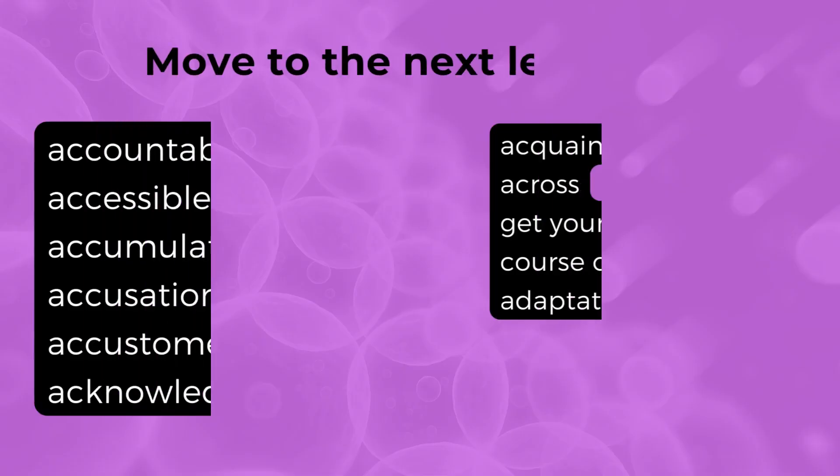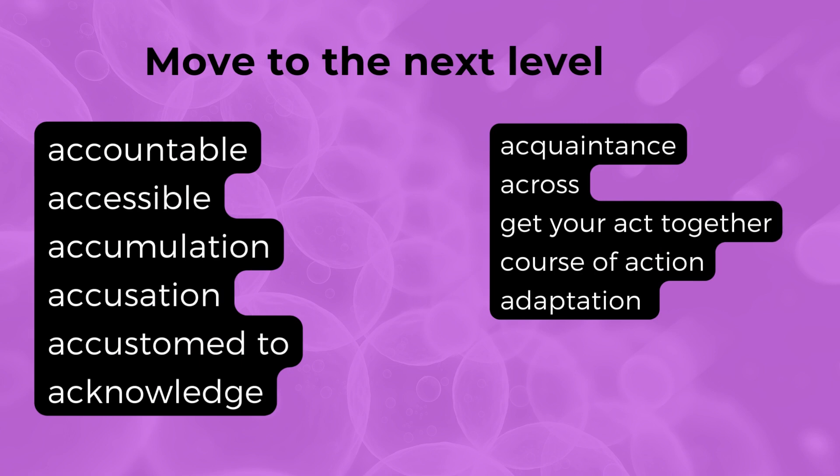Once again, let's have a look at all the words. Accountable — we gave the hospital example. Accessible — giving permission to reach something or enter some place. Accumulation — amassing money and wealth, and the example of the chemicals. Accusation — an allegation that can be right or wrong; you say that somebody did something bad.